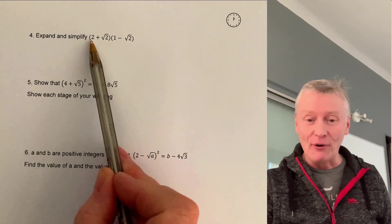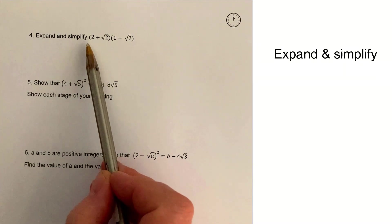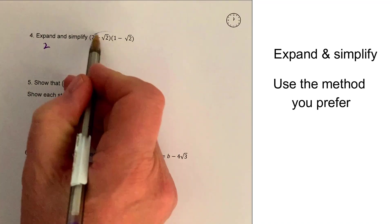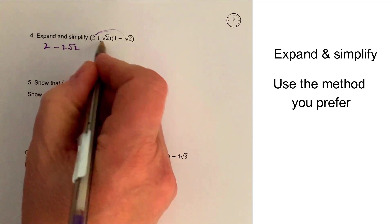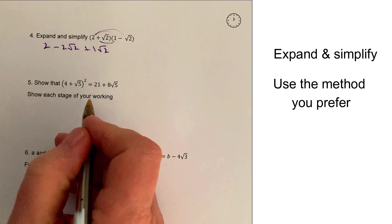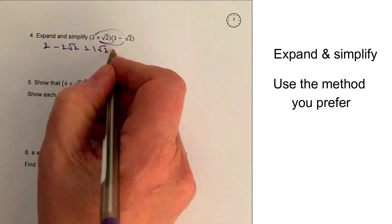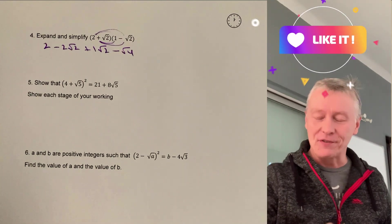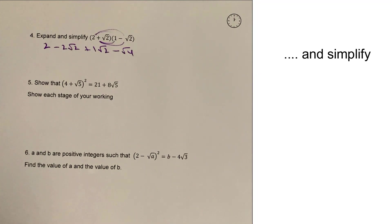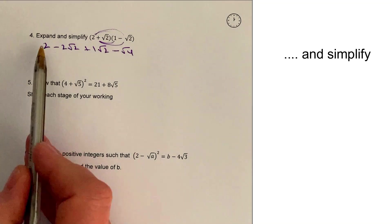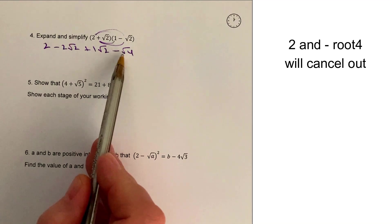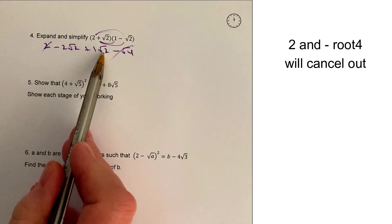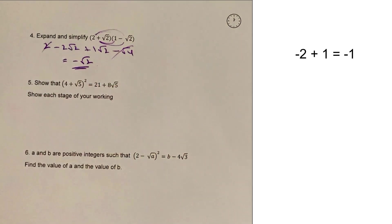On to question 4, another expansion using the same principle. 2 times 1 is 2, and 2 times minus root 2 is minus 2 root 2. Then plus 1 root 2, and minus times plus is minus, giving minus root 4. Simplifying: the square root of 4 is 2, so the constant terms are 2 minus 2, which cancel out. And then minus 2 root 2 plus 1 root 2 gives minus root 2 as the final answer.